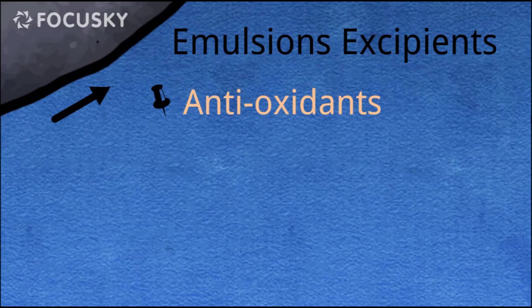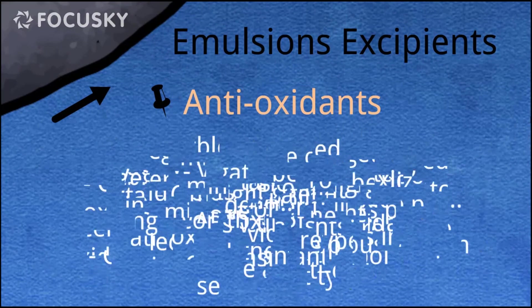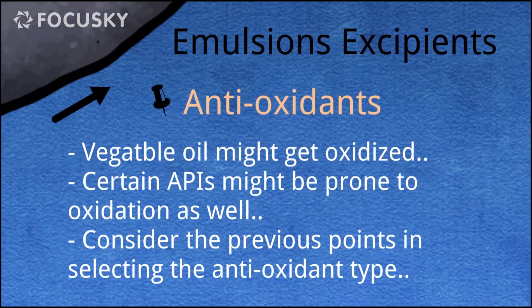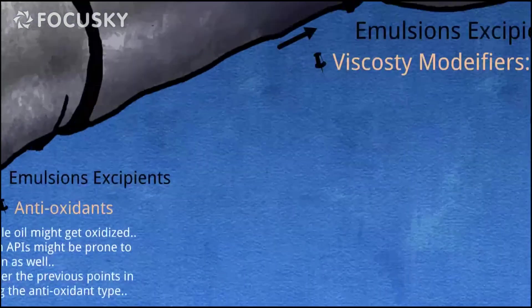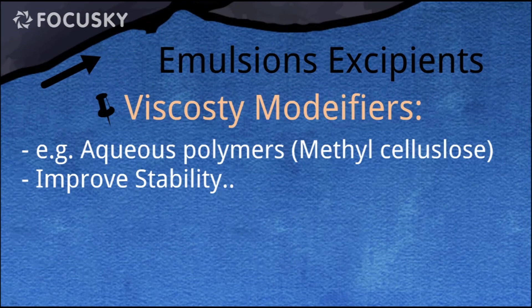An important one we don't want to miss is the antioxidant. Certain oil phase classes are liable to oxidation, like vegetable oils, and thus it's essential to include antioxidants to preserve the oily phase and the emulsion in general. It's worth mentioning that not only the oil phase is liable to oxidation — the active ingredient might also be prone to oxidation. That's why we need to determine which antioxidant to use and whether it's hydrophobic or hydrophilic, depending on the targeted component and its phase.